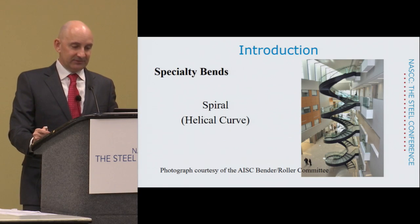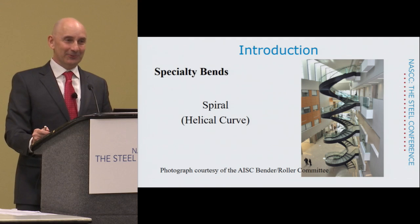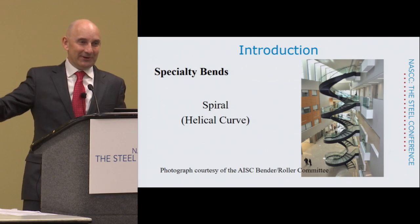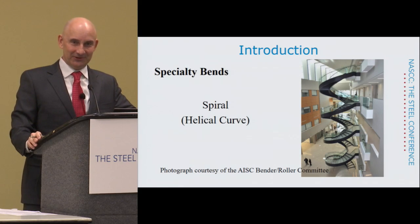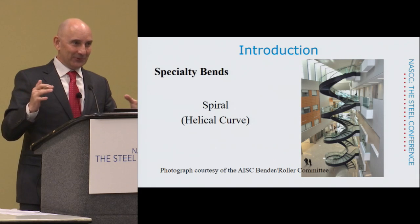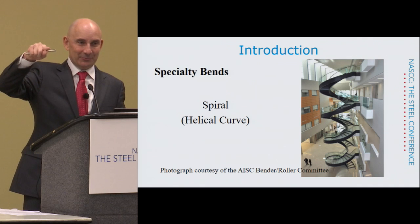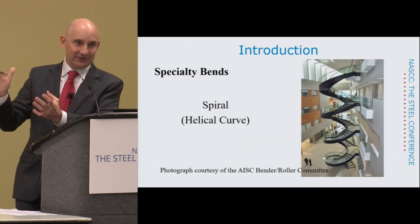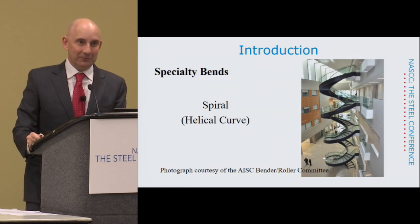Last on specialty bends is the spiral. Everybody knows what a spiral is — this is a really nice tight curved spiral stair. The technical definition of a spiral is a two-dimensional curve that starts at some radius and expands. So this is technically not a spiral stair, but it's become common terminology over the years. This is officially a helical curve — but I think we'll just keep calling these spirals.